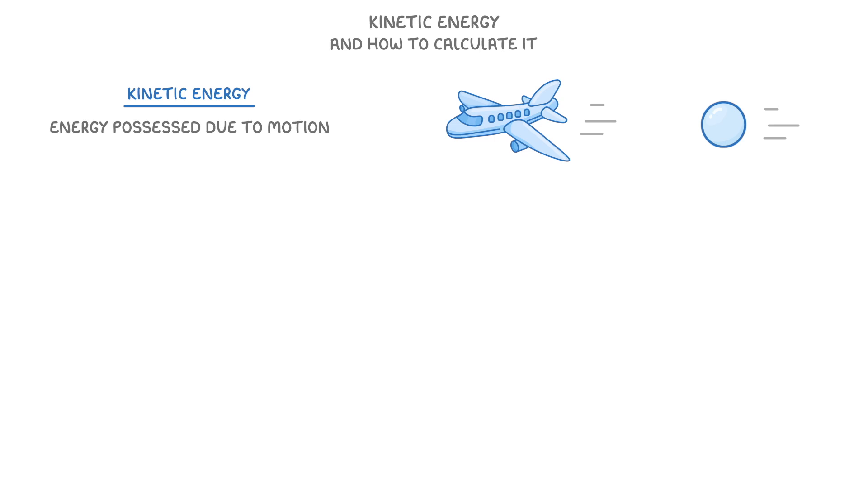How much energy an object has depends on two things: its speed and its mass. For speed, the faster an object is moving, the more kinetic energy it will have.